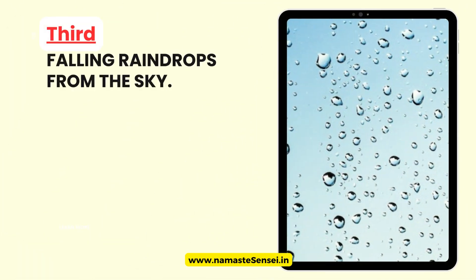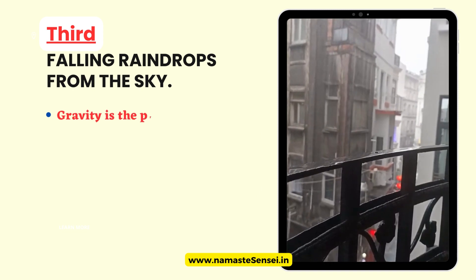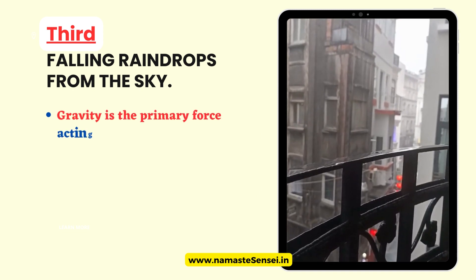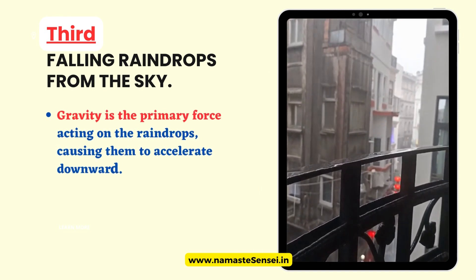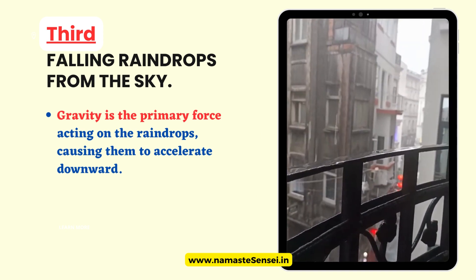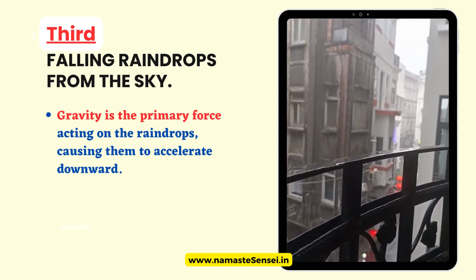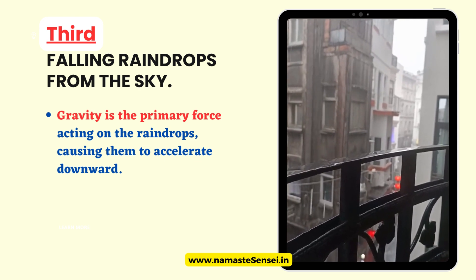Third, Falling Raindrops from the Sky. When raindrops fall from the sky, they undergo a free fall motion governed by gravity. As they descend, gravity is the primary force acting on the raindrops, causing them to accelerate downward. Despite the influence of air resistance, raindrops still experience free fall motion under the dominant force of gravity.